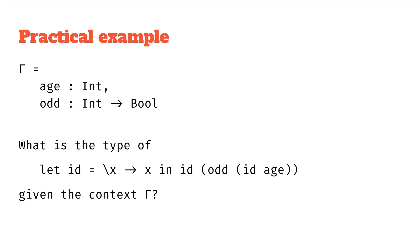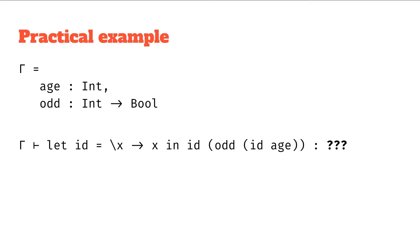So let this identity function be the identity function in using this id function, so this identity of odd, which is going to then be applied to the identity of age, given this context capital gamma. And again, converting this into simple form, we get from the context capital gamma, let id equals backslash x to x in id odd id age is what type.